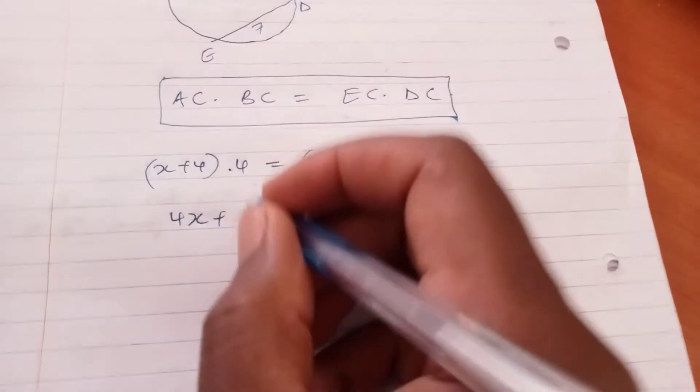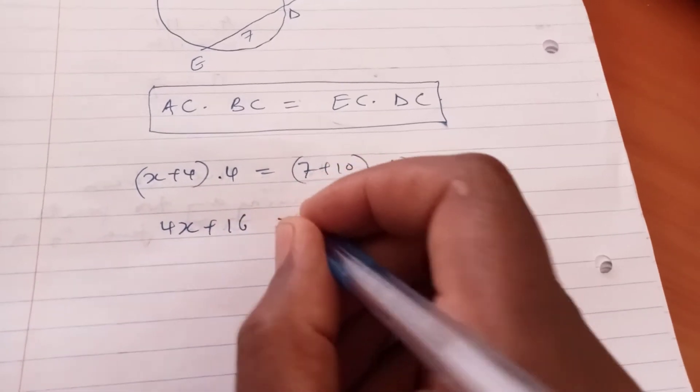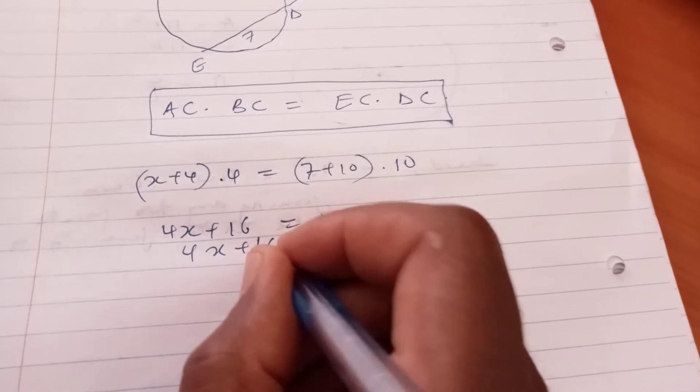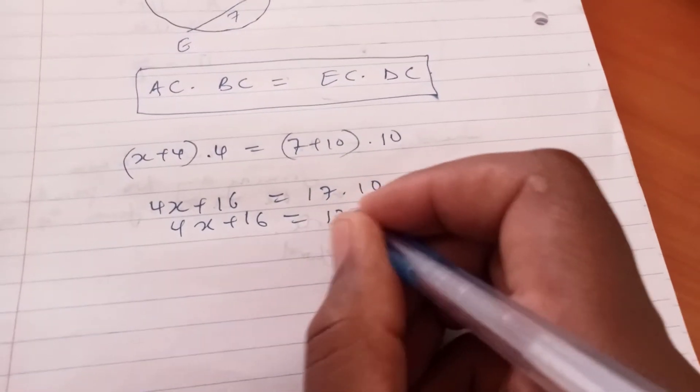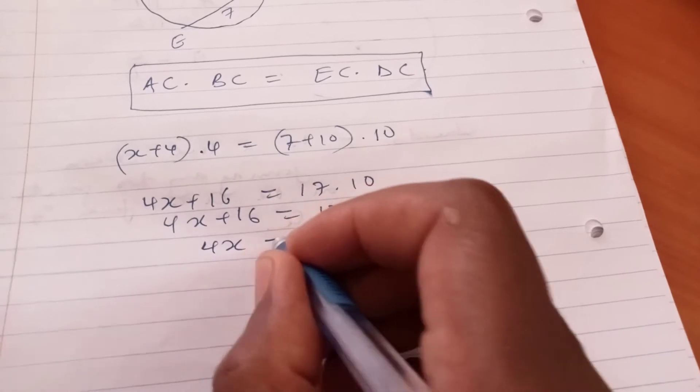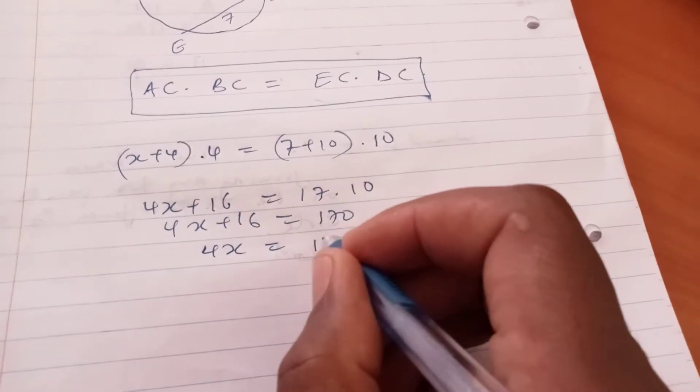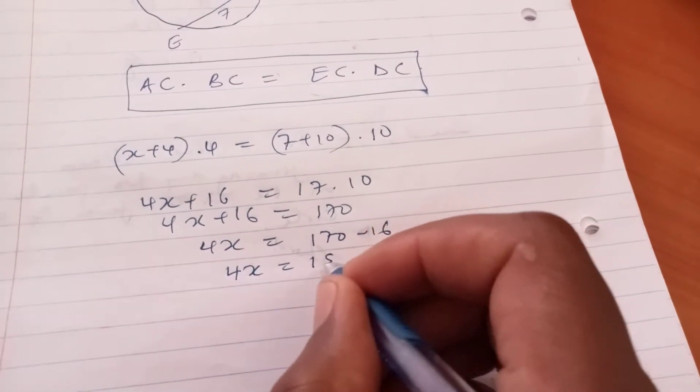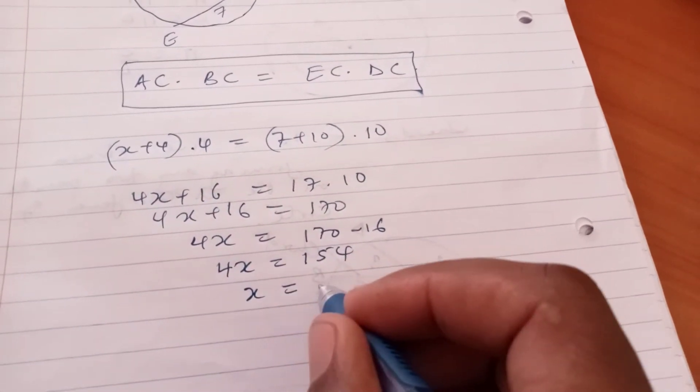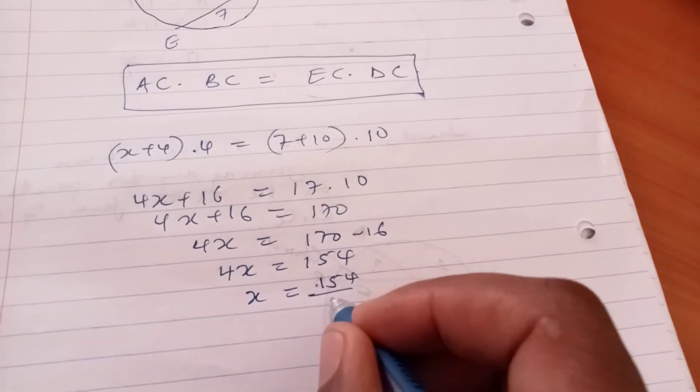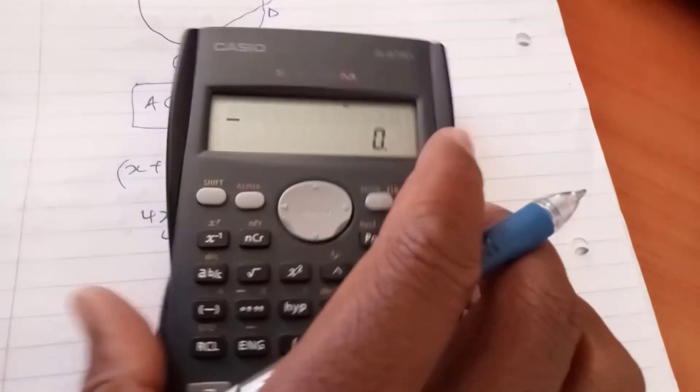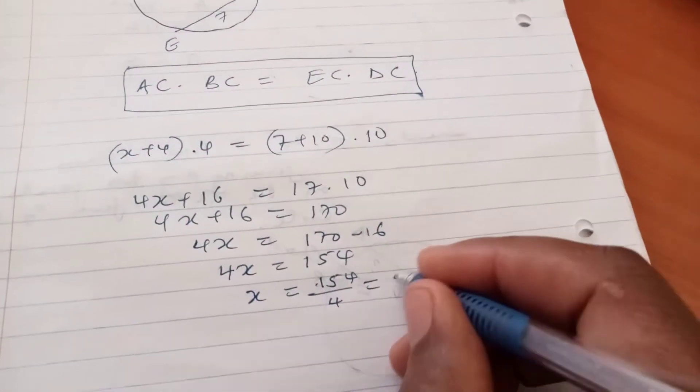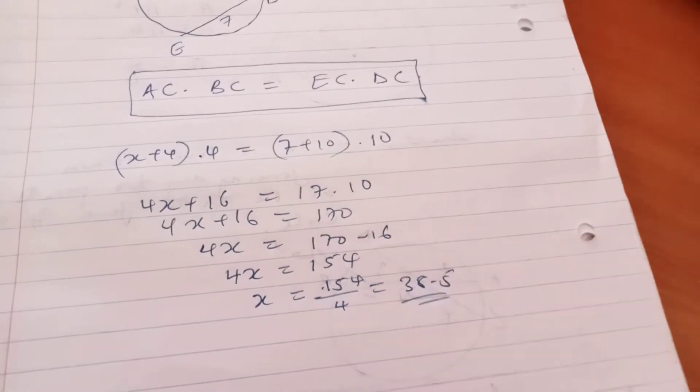So you have 4X plus 16 equals 17 times 10. So 4X plus 16 equals 170. So 4X equals 170 minus 16. 4X equals 154. So X equals 154 divided by 4, which is 38.5. So that's what you do.